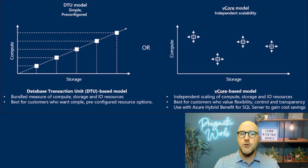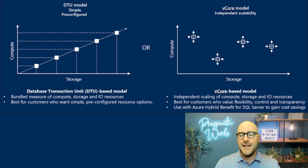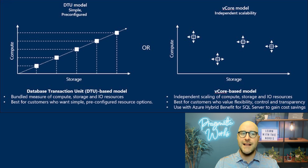A DTU purchasing model comes with a predefined set of performance tiers such as basic, standard, and premium. With each tier comes its own set of fixed resources and corresponding limits.